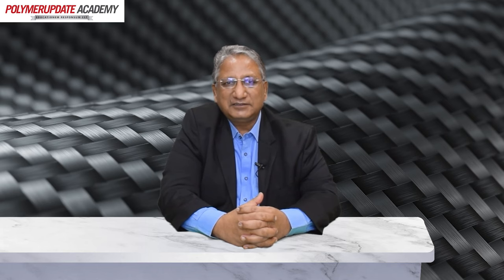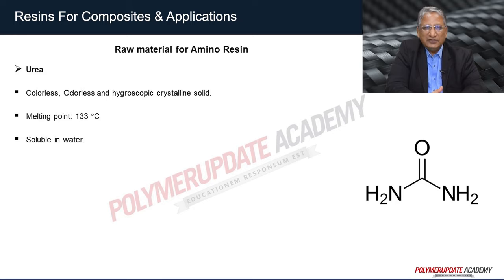After studying vinyl ester and epoxy resins, the next composite resin is amino resins. Amino resins are urea formaldehyde resins and melamine formaldehyde resins. Urea is used to manufacture urea formaldehyde resins. Urea is a colorless, odorless, hygroscopic crystalline solid with a melting point of 133°C and is highly soluble in water.